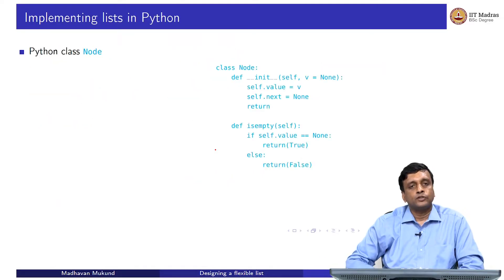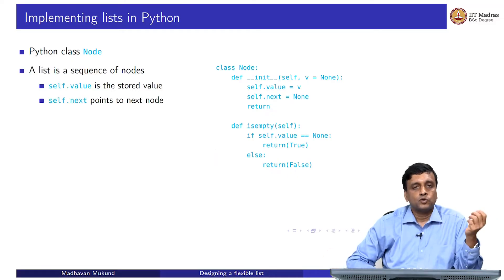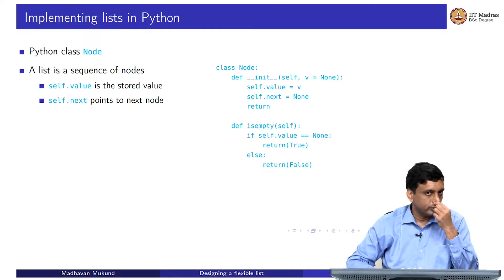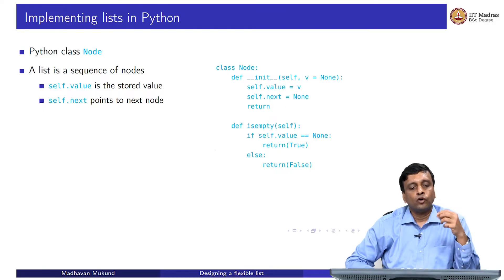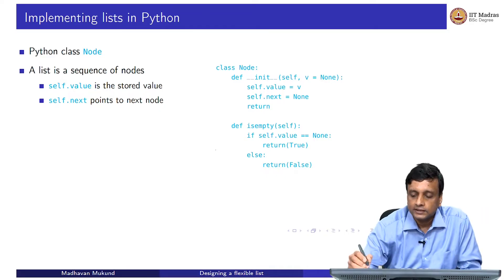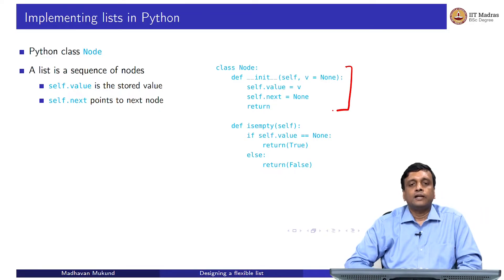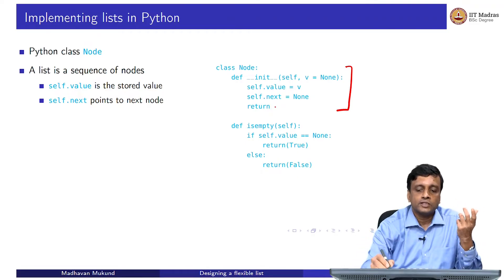We define a class node and this class node will have two parts. It will have one part which stores the value, so let us call it self.value. Remember this object-oriented concept we discussed in the first week — each object refers to itself through the name self. So self.value is the value field and self.next is the name for the next node in the list. If there is no next node, we use the default Python value None. This is the initialization: when I initialize a node, I pass a value, I set the value to it, and initially the next is always None.